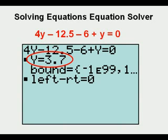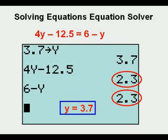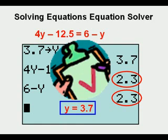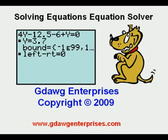We check by re-entering the original equation, clearing the screen, then entering 3.7 for y and evaluating each side. Since both sides are 2.3, we know that 3.7 is the correct value for y. Check. We will try to have more lessons showing how to use equation solver. Thanks for viewing.